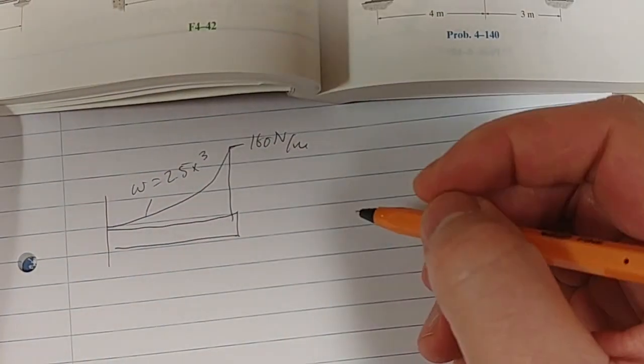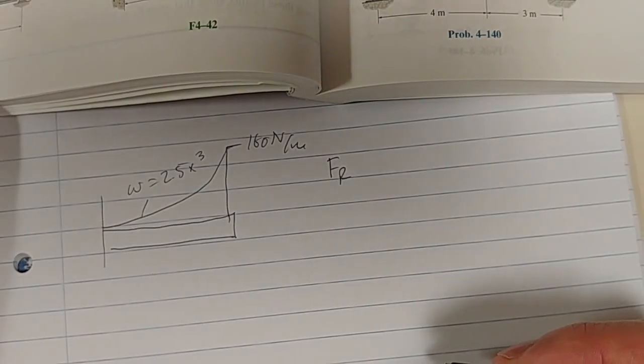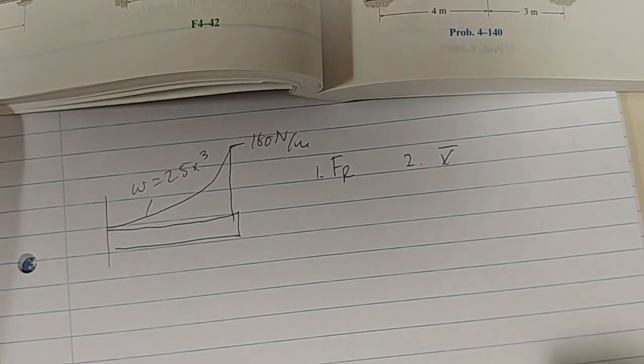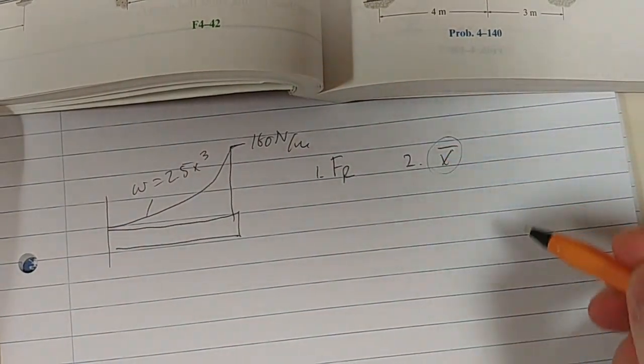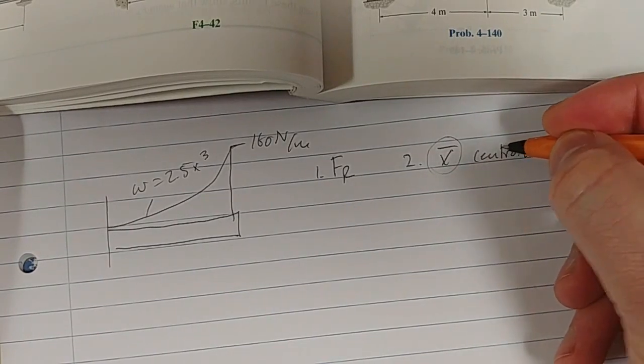So there's our beam, there's our distributed load, so w = 2.5x³. This maximum value is 160 Newton per meter. Remember we're trying to do two things: we're trying to get our FR, our resultant force, number one, and number two we need to find where it acts on the beam, and it always acts through the centroid of this area.